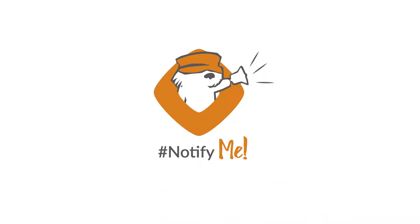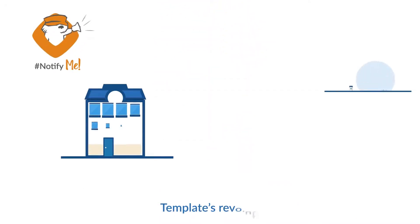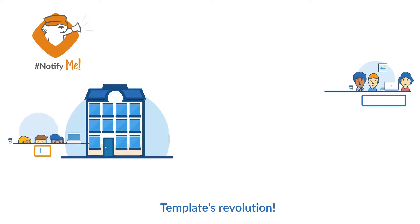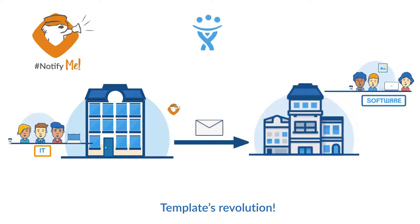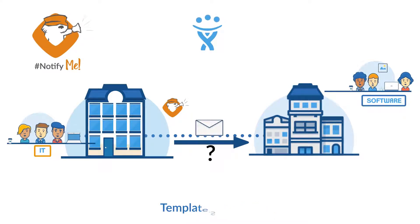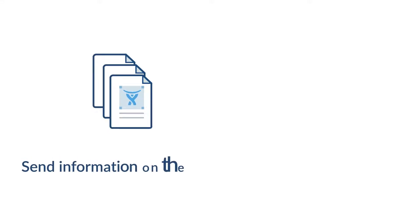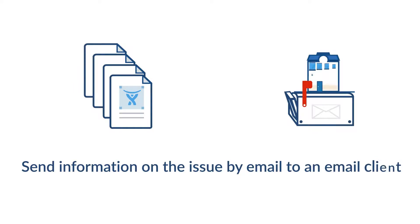Notify Me. Do you want to send an issue-related notification? Want issue details to be reviewed by clients before starting work? Want to share and get feedback without exposing your Jira instance to external users? Notify Me enables you to send instant email notifications with just one click. Notify Me helps you reach all stakeholders inside and outside your company, sending them issue information by email without having to switch context to an email client.